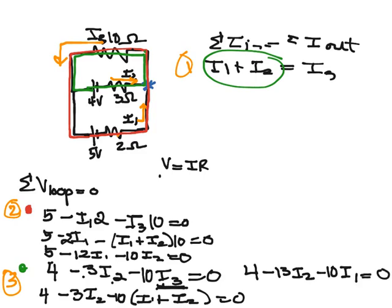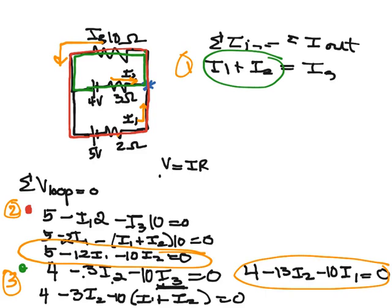So what I've gone ahead and done is I have reduced my number of unknowns, so right now I'm going to circle these two equations that I ended up with, and now I only have I1 and I2 to deal with.